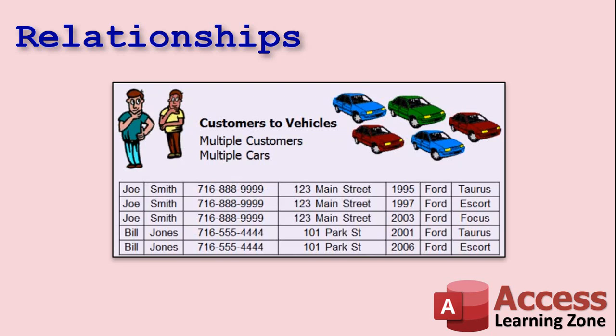If you want to change Joe Smith's address, you've got to make sure you change it in three different places. The exception, of course, is if you want to track something important at the time — for example, where an order was shipped or a customer's address at that time. But if you just want Joe Smith's current phone number and address, this is a lot of wasted, duplicated information.